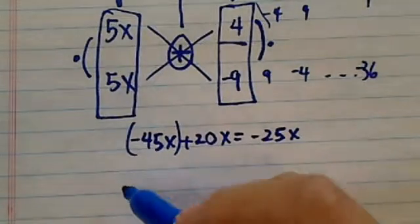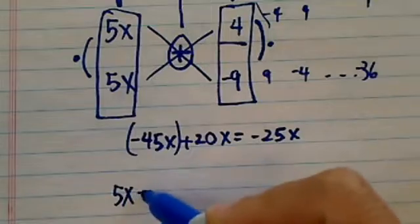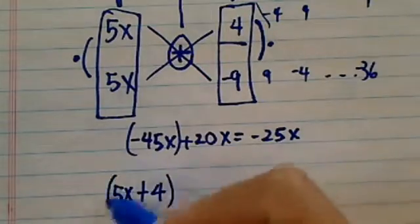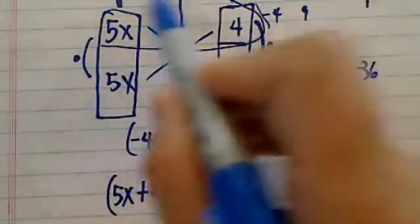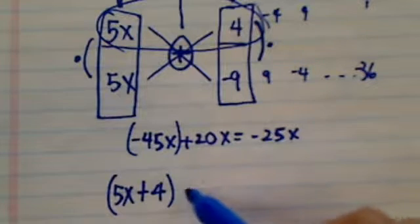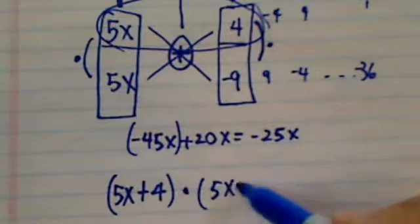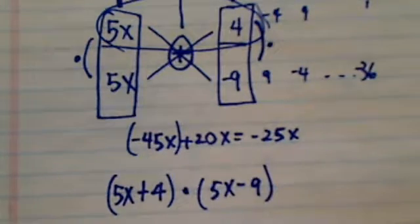So to write it out what I have is (5x + 4) times (5x - 9). Okay now let's check it.